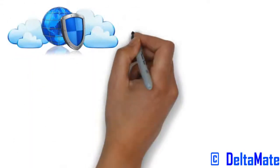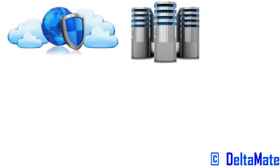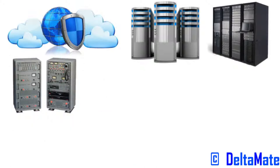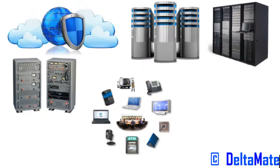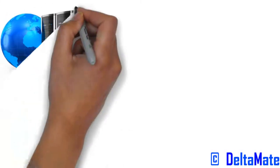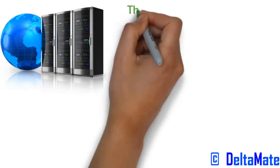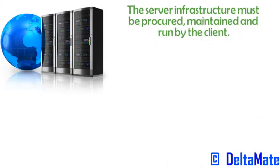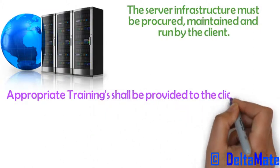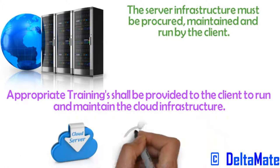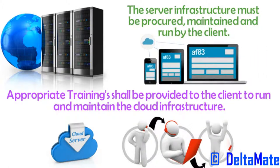Cloud server. Asynchronous server technology ensures high throughput with minimal system resources. The server infrastructure runs the broadcast system which relays the broadcast content to all connected devices like the smart TV connectivity box, Android mobile phones, and Android tablets. The server infrastructure requirements will be provided; it must be procured, maintained, and run by the client. Appropriate training shall be provided to the client to run and maintain the cloud infrastructure. The architecture can support connectivity of thousands of connected devices, and server software to relay the broadcast system will be provided.